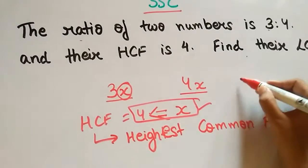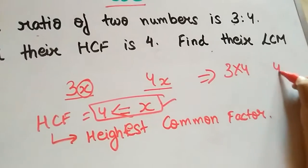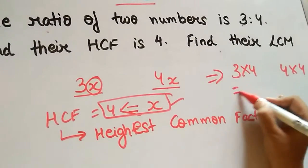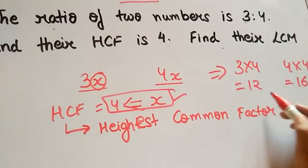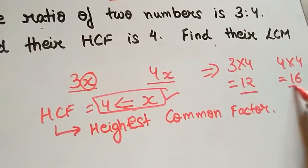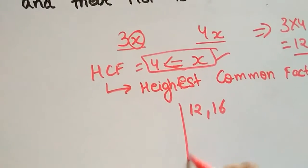So the two numbers will be 3 times 4 and 4 times 4, which comes out to be 12 and 16. Now let's calculate the LCM of these two numbers.